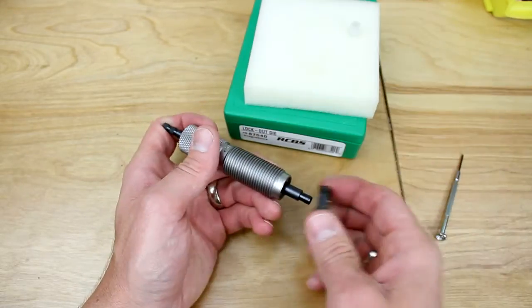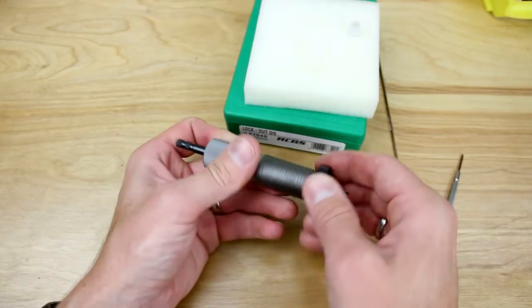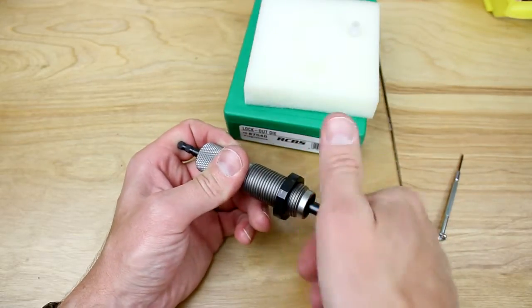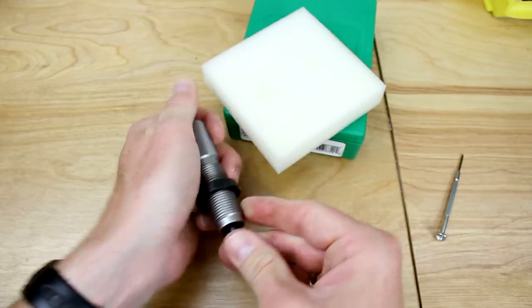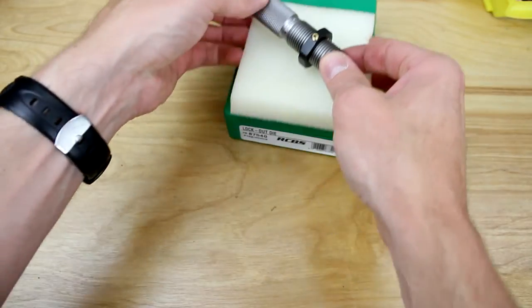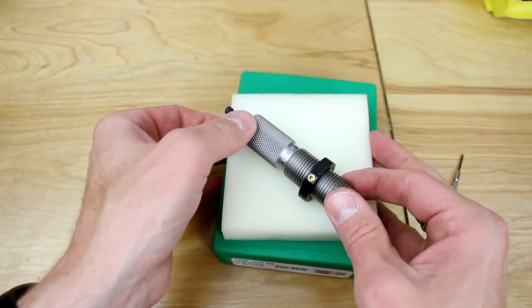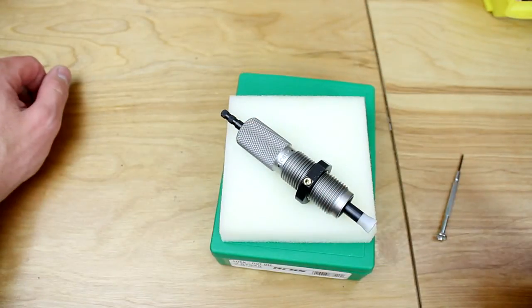Okay. We can put our lock ring back on. Snap the foot on. And there we are. We are back pretty much to where we started and the die is now ready to use.